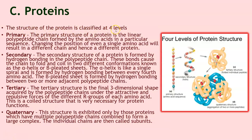The structure of protein is classified at four levels. Primary: the primary structure of a protein is the linear polypeptide chain formed by the amino acids in a particular sequence. Changing the position of even a single amino acid will result in a different chain and hence a different protein.